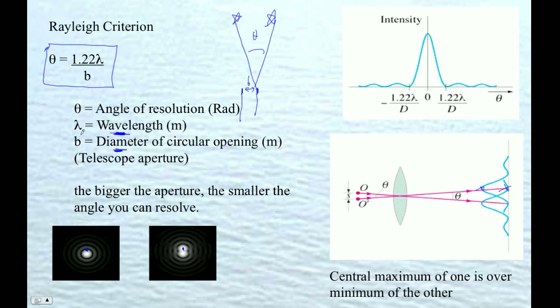If you notice, if you look at this thing, the bigger B is, the smaller that angle can be, the closer the stars can be. So this is why we have giant telescopes, one of the reasons why we have giant telescope apertures, is to get better resolution. The other reason is to simply gather more light. It's got more area, more frontal area, so more photons are collected.